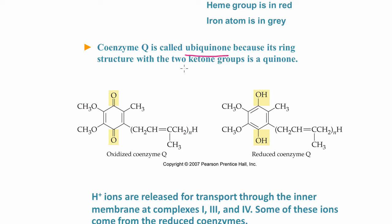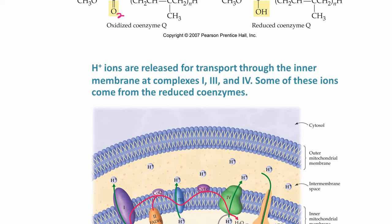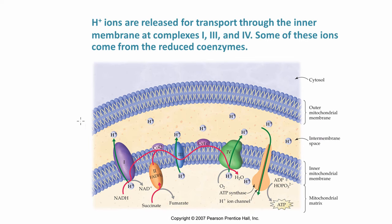Coenzyme Q, also called ubiquinone, has a ring structure with two ketone groups, making it a quinone. In the electron transport chain, hydrogen ions are released for transport through the inner membrane at complexes 1, 3, and 4. Some of these hydrogen ions come from the reduced coenzymes—NADH and FADH2. Notice that NADH interacts with complex 1, and FADH2 enters separately.